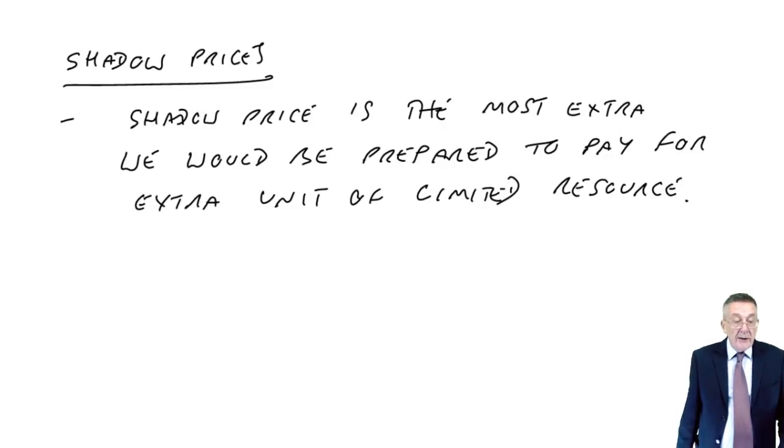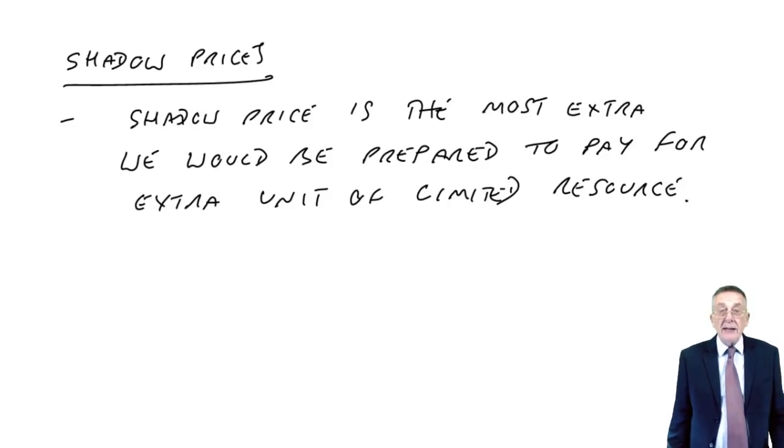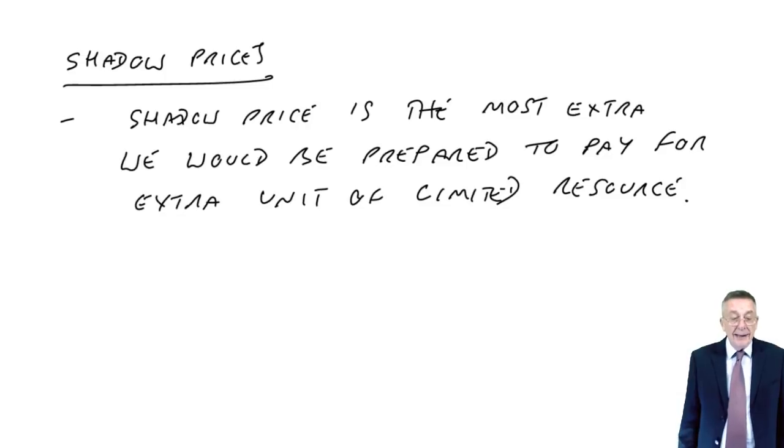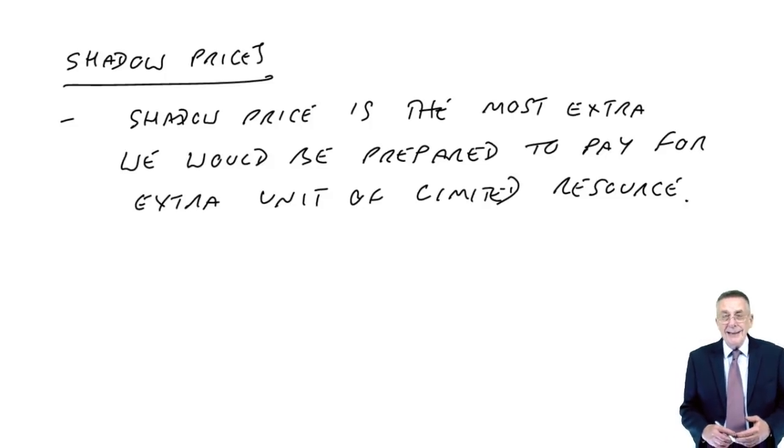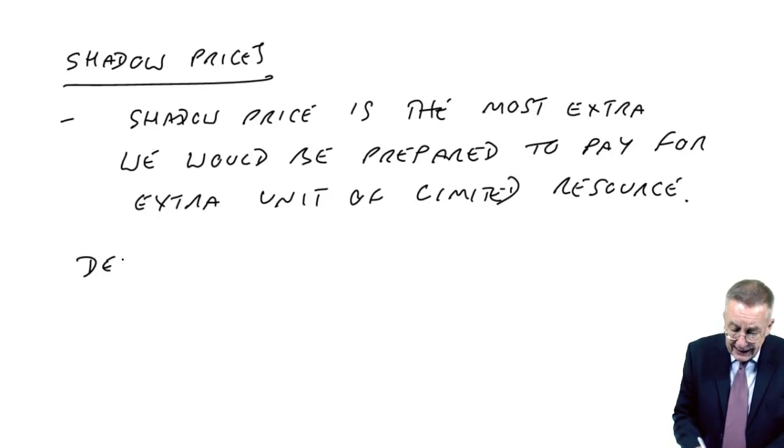At the moment, we are limited. There's only 80 kilos of material, there's only 180 hours of labour, there's only a demand of 10 for executives. But if we could get one extra kilo of material, if we could get one extra unit of labor, if we could get one extra unit demand for executive, then how much extra would it be worth paying for it? Well, one of them is very obvious. What about demand for E?